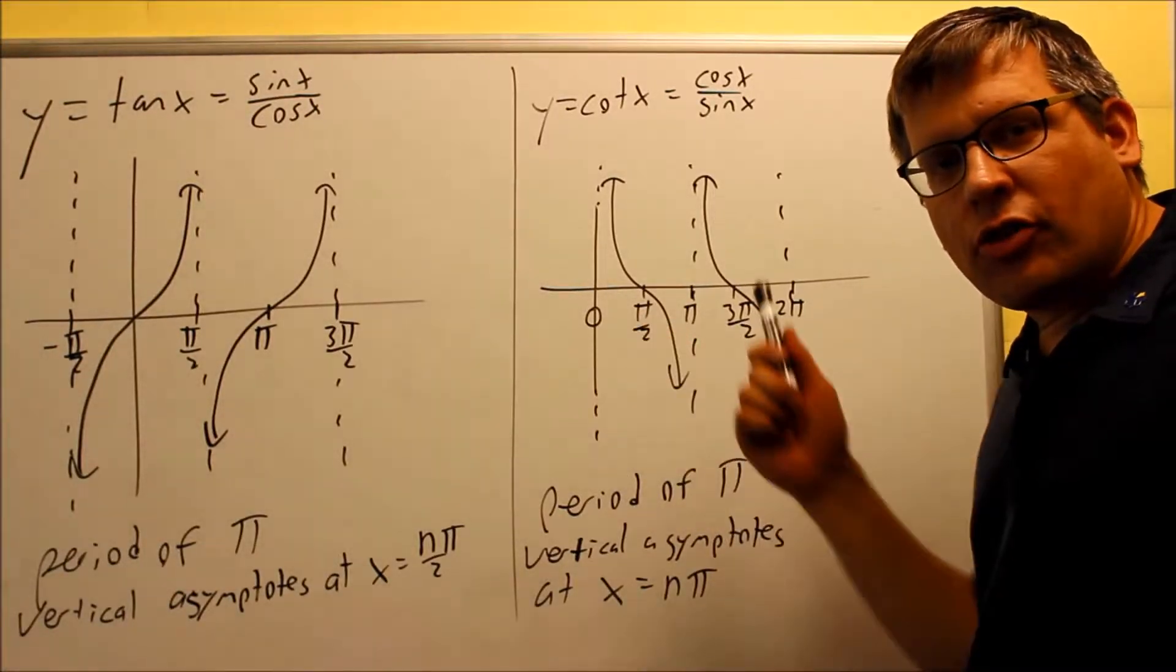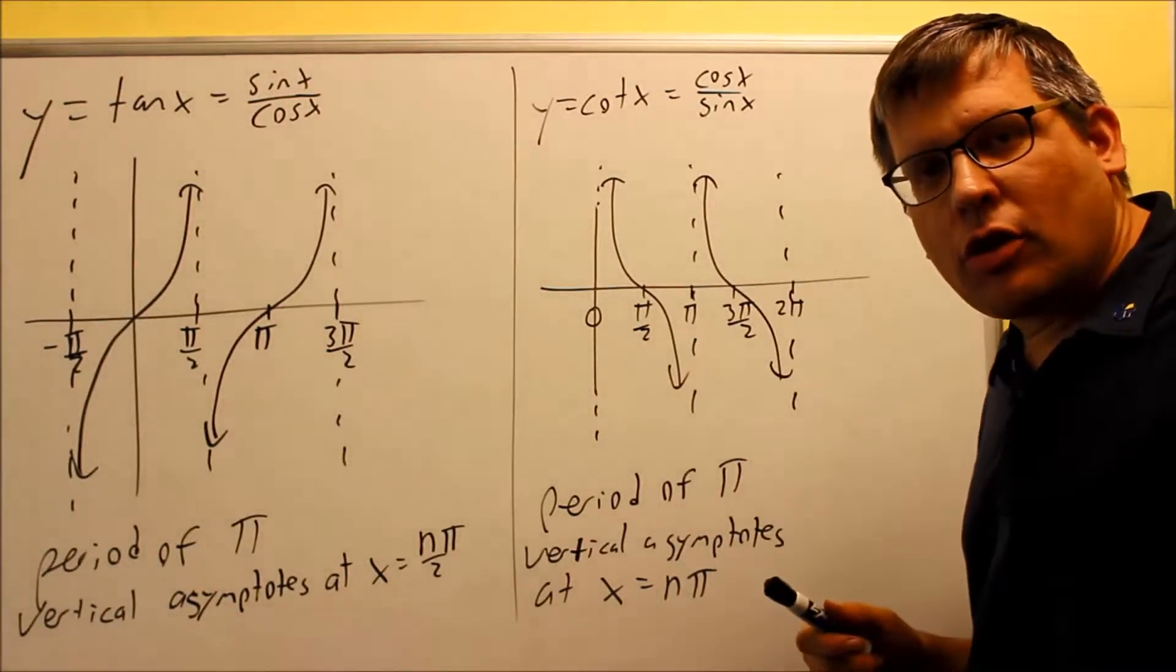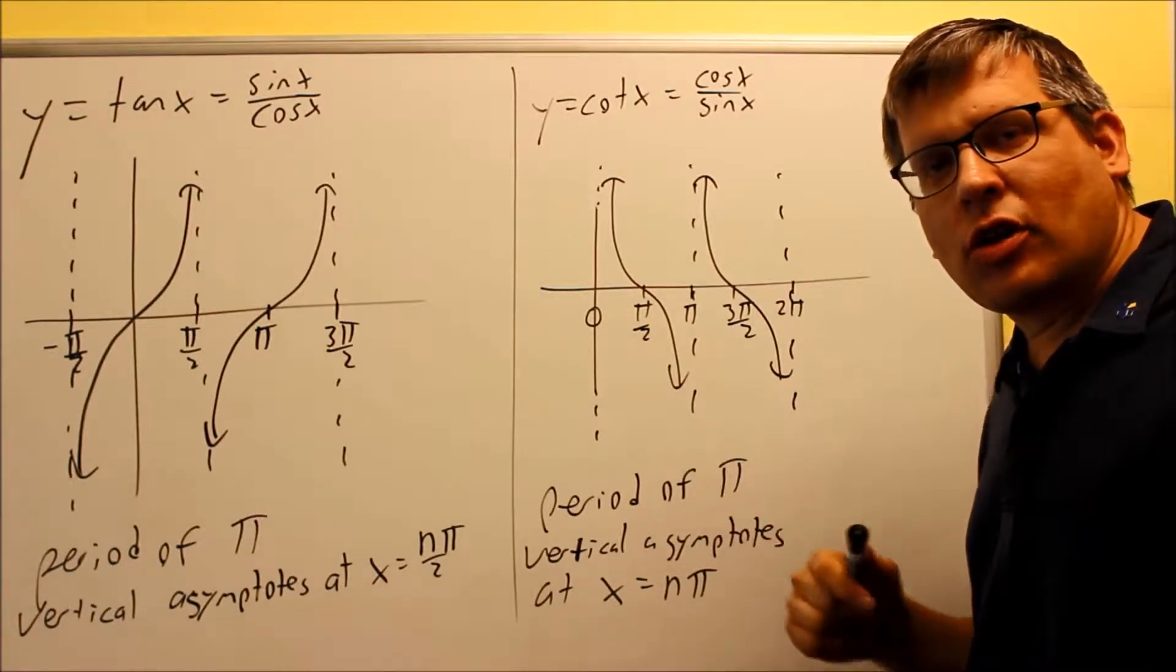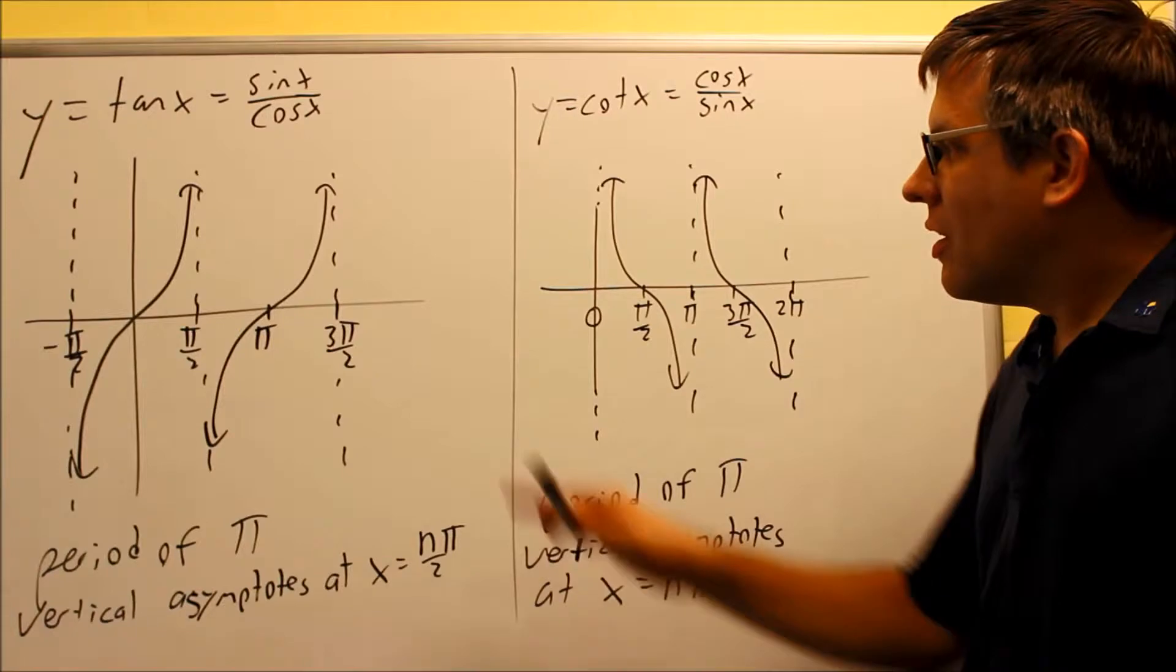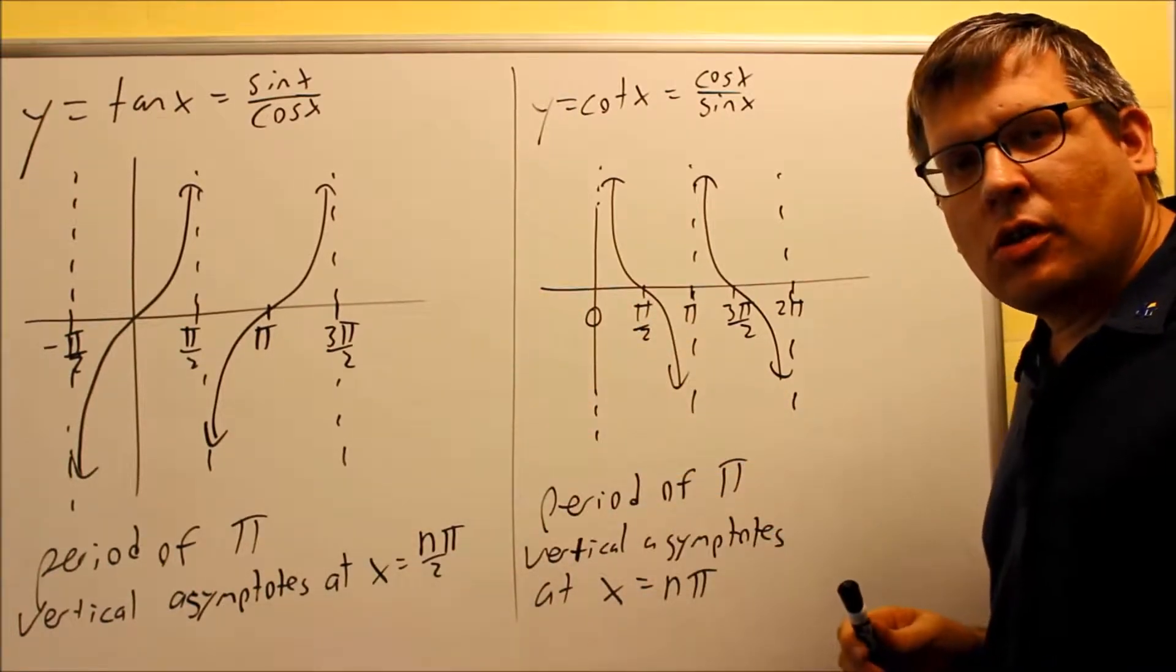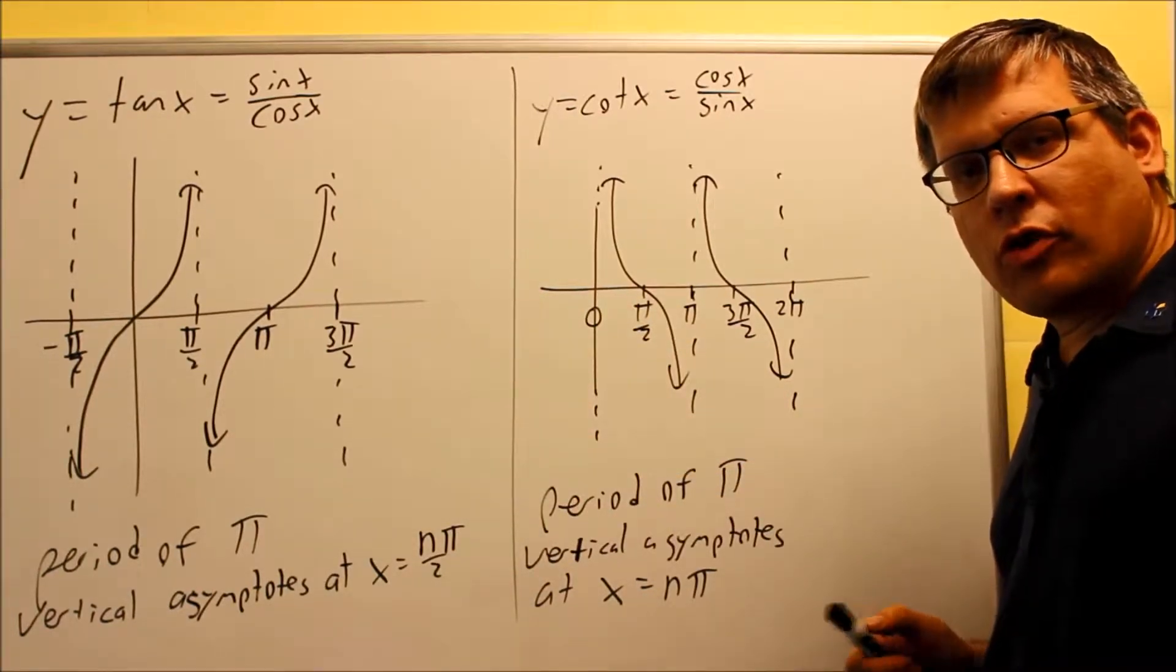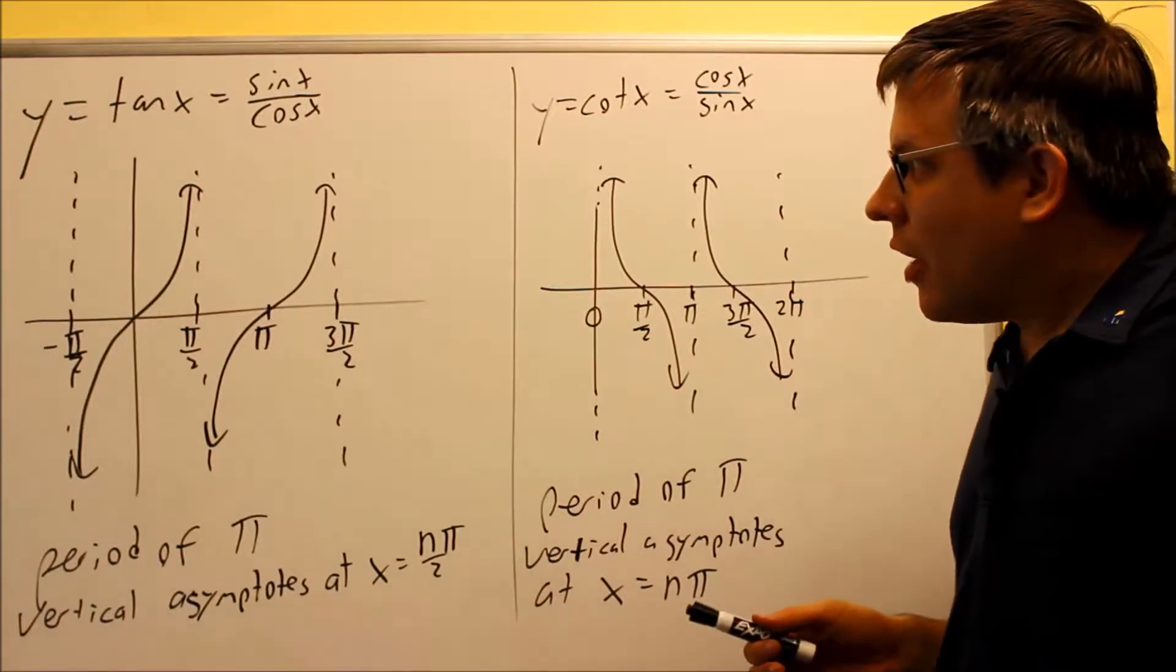Okay, now we're going to look at two different graphs that are completely different from the other four we've done so far. We so far looked at sine, cosine, secant, and cosecant. These two graphs are going to be different than the ones that we did before, so that's why we save these for the end here.